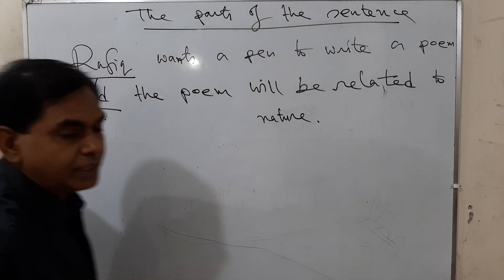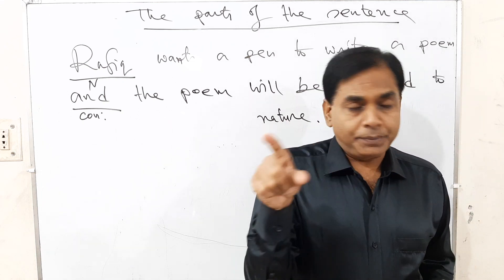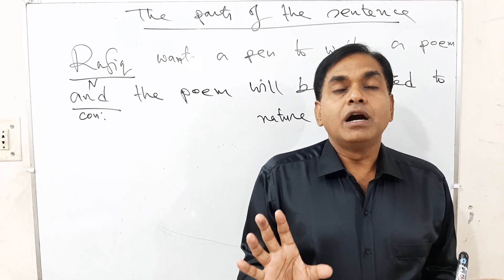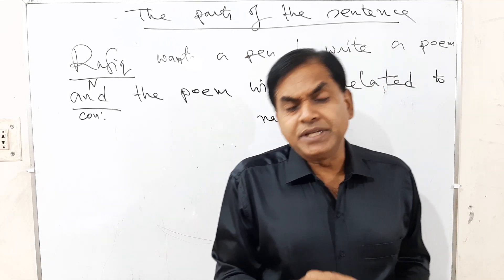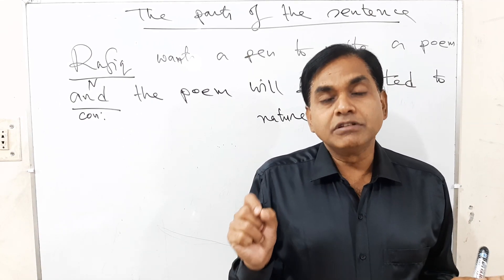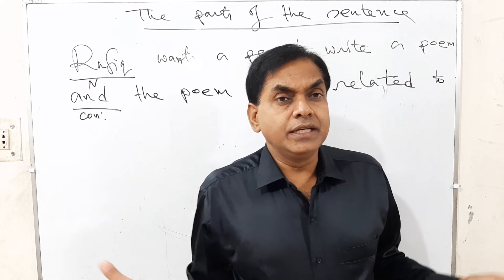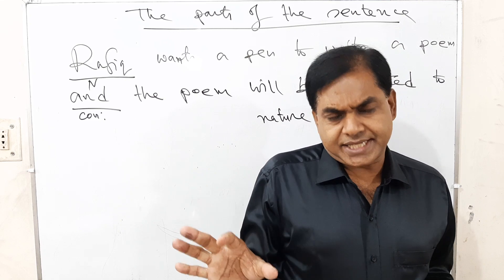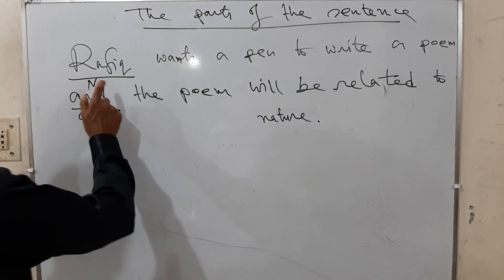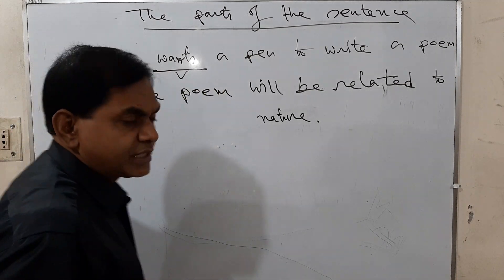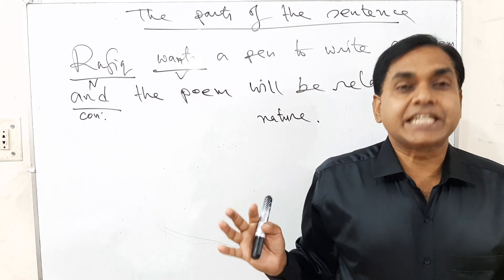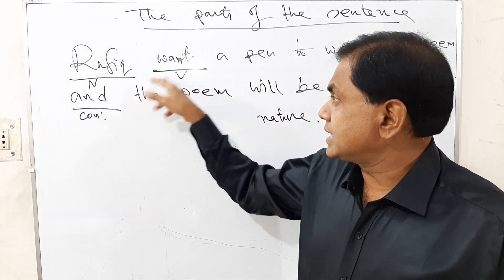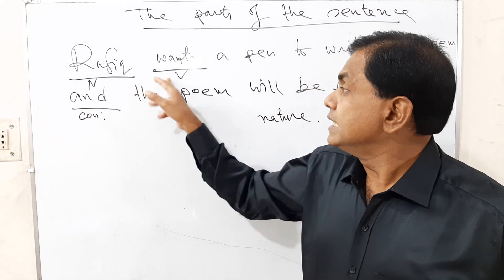'Rafik' is a noun. Why? Rafik is the name of a person. The word which indicates the name of a person, a place, a thing, or anything — we call it a noun. That means noun is a naming word. So Rafik is a noun. 'Wants' is a verb. Verb means action. What is the function of that word in this sentence? It completes the action in this clause. So 'wants' here is a verb.